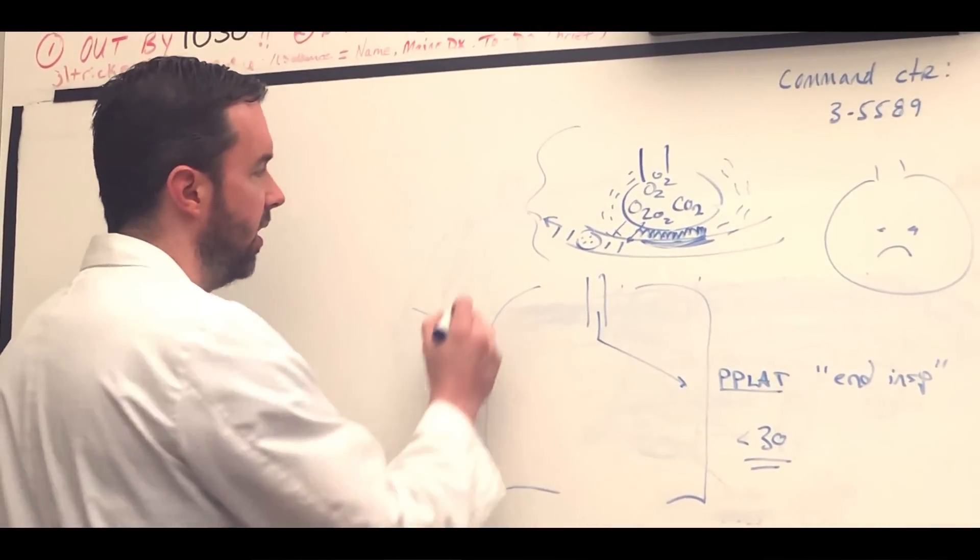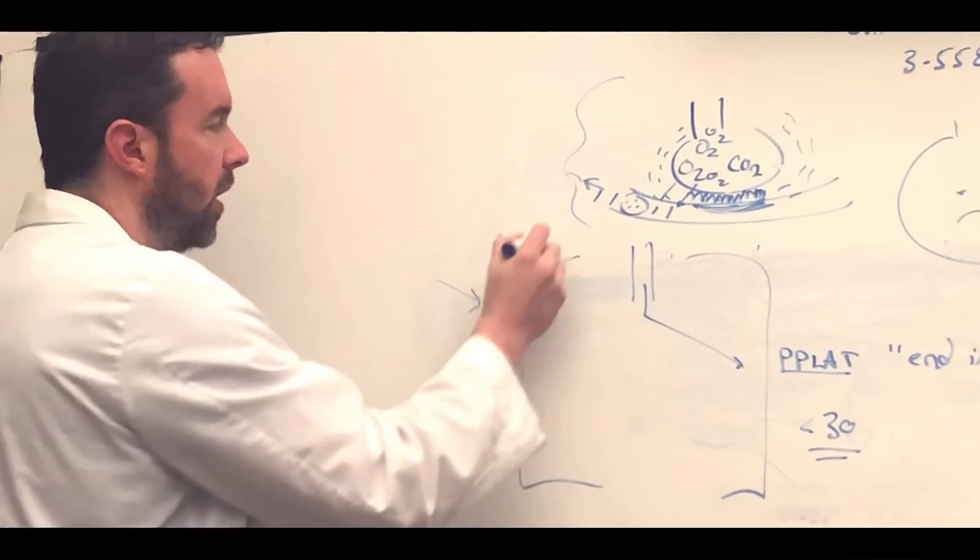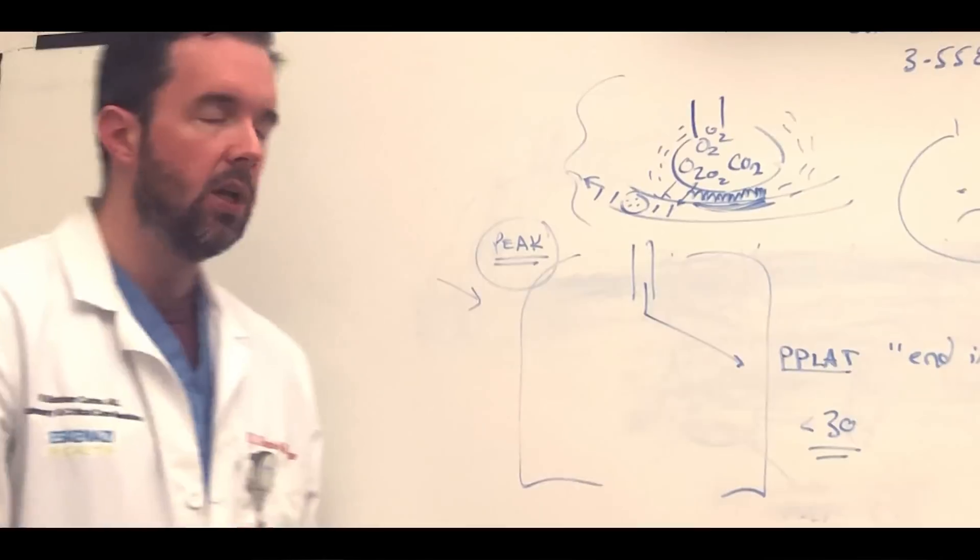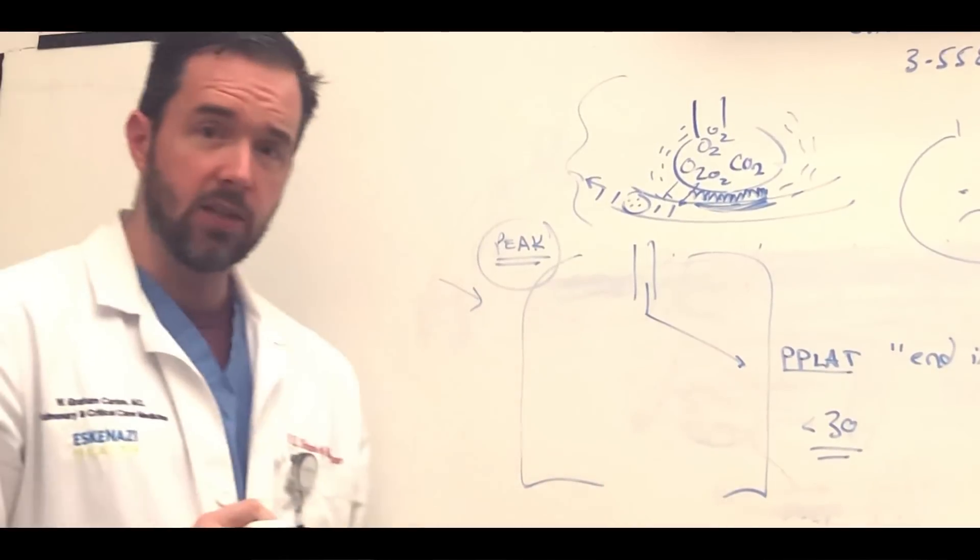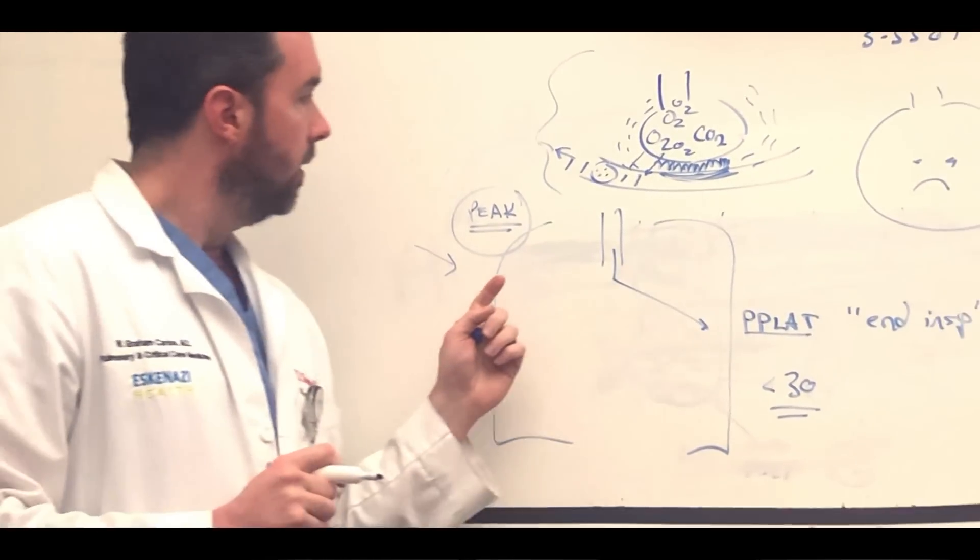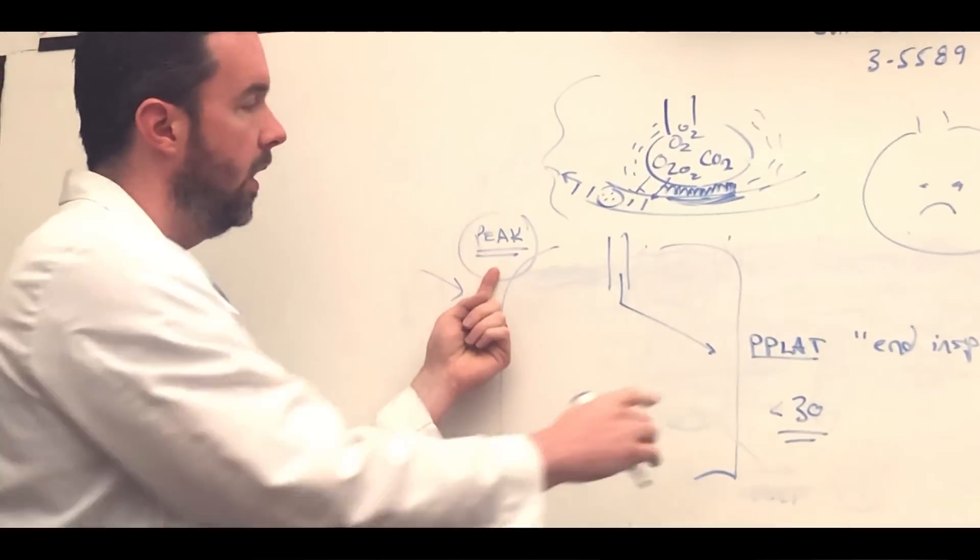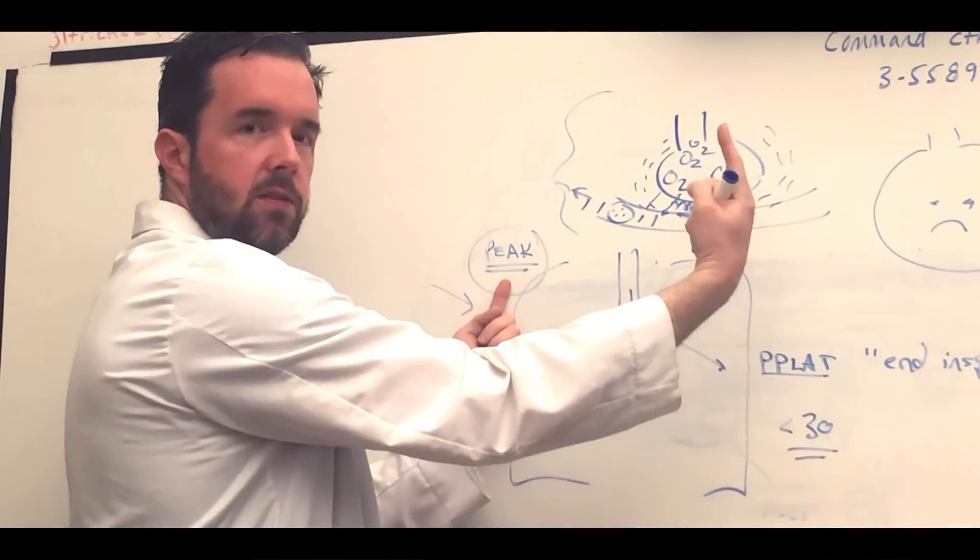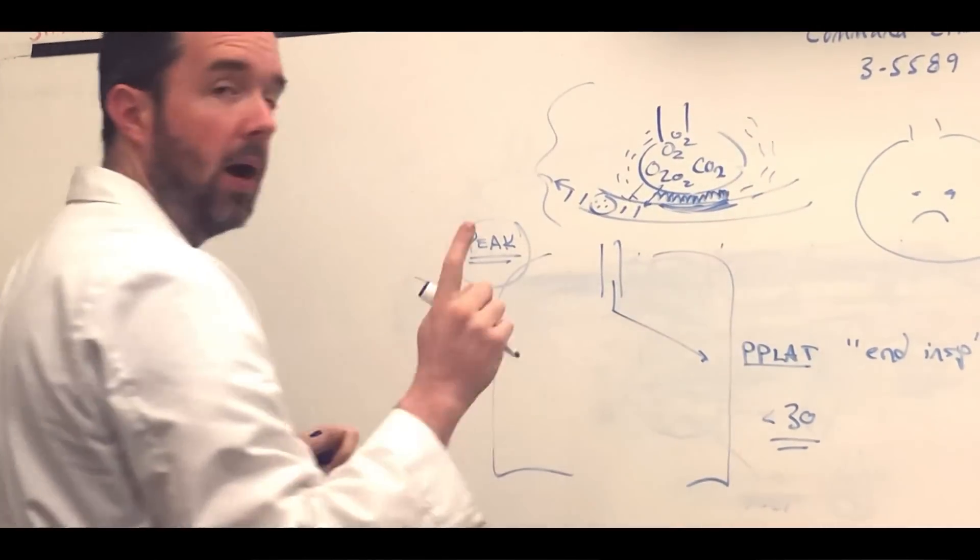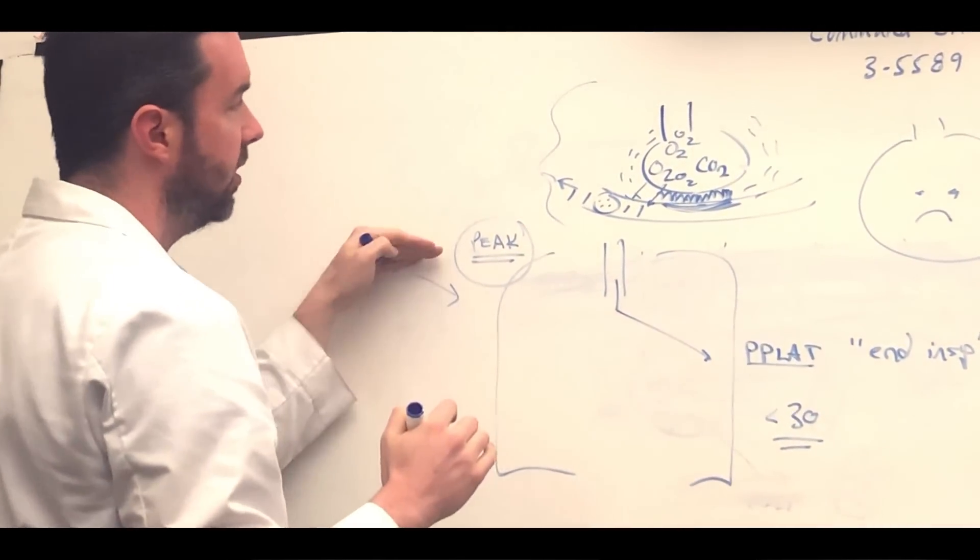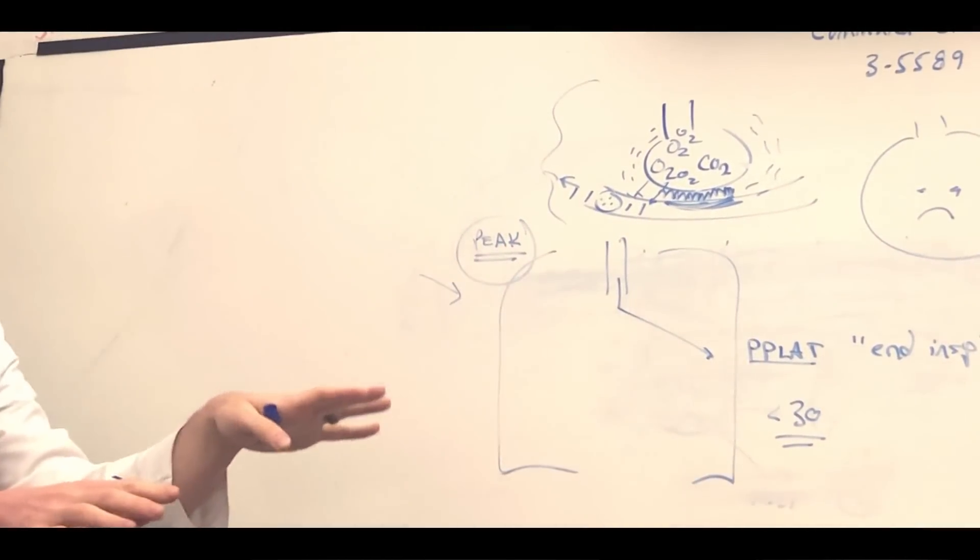Another pressure to become familiar with on ventilators is the peak pressure, P-E-A-K. The peak pressure is going to be the highest pressure that the ventilator records as air is going to the patient. Here's the concept you need to understand. The peak pressure is always the highest pressure. So if the plateau pressure rises, the peak pressure will also rise. They rise together. But there are other things that can cause the peak pressure to rise that don't necessarily involve the plateau pressure rising. Let me explain.